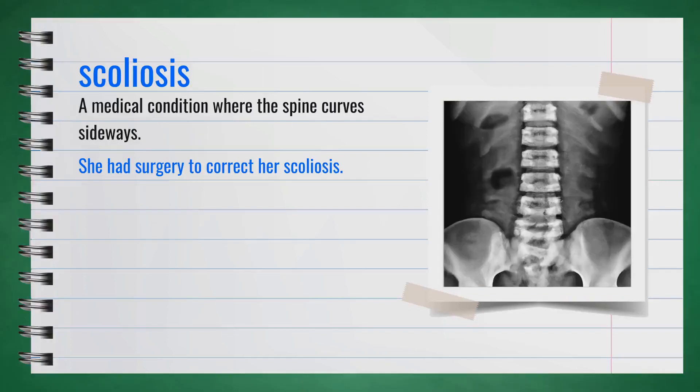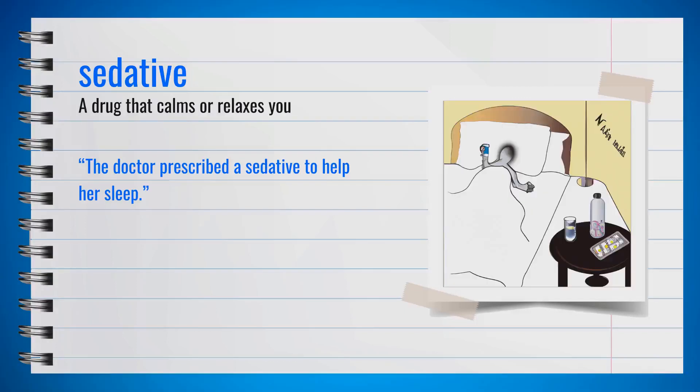The word scoliosis, spelled S-C-O-L-I-O-S-I-S, is a medical condition where the spine curves sideways. For example, she had surgery to correct her scoliosis. It can cause pain and affect posture. In summary, scoliosis is a sideways curvature of the spine.